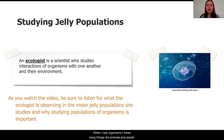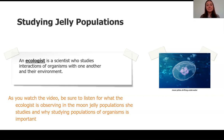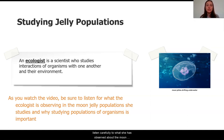When I say organisms, I mean living things like animals and plants. The specific type of organism that this scientist studies are called jellyfish or jellies. Lots of people call them jellyfish, even though many people don't know that they're not actually a fish. The scientist studying these moon jelly populations has noticed something about them in the previous weeks. As you're watching the video, I encourage you to listen carefully to what she has observed about the moon jelly populations and why she thinks it's so important to study different populations of organisms.